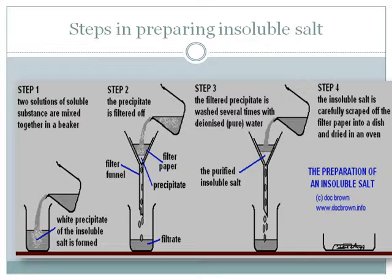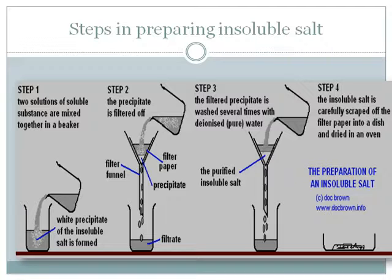Now let us look at the steps followed in preparing insoluble salt. The first step is to mix the two solutions of soluble salts. The second step is to filter the mixture so that we get the residue trapped in the filter paper and the clear filtrate. The third step is to rinse the residue by pouring distilled water on it. The solution that remains in the beaker is the filtrate, which is the soluble salt.